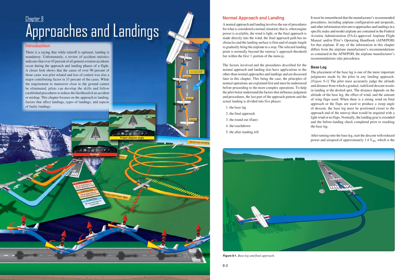The manufacturer's recommended procedures, including airplane configuration and airspeeds, and other information relevant to approaches and landings in a specific make-and-model airplane are contained in the FAA-approved Airplane Flight Manual and/or Pilot's Operating Handbook (AFM/POH). If any information in this chapter differs from the airplane manufacturer's recommendations as contained in the AFM/POH, the airplane manufacturer's recommendations take precedence. The principles of normal operations are explained first and must be understood before proceeding to the more complex operations.